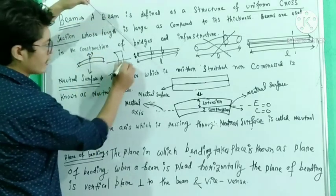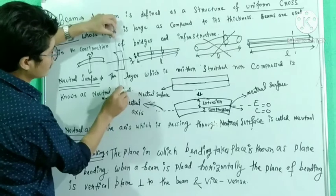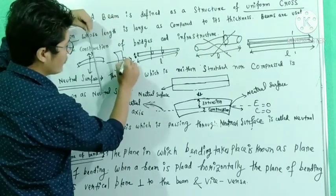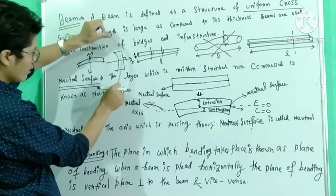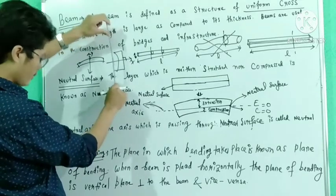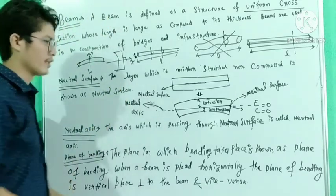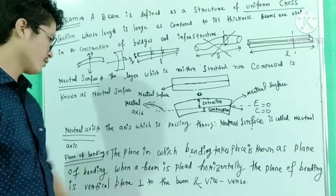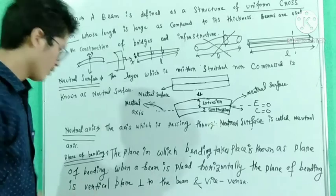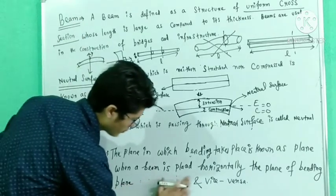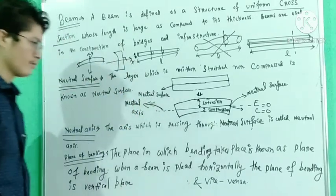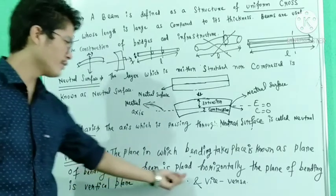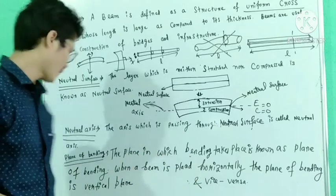Y means vertical and X means horizontal. The plane in which bending takes place is called the plane of bending. When a beam is placed horizontally, the plane of bending is a vertical plane perpendicular to the beam.